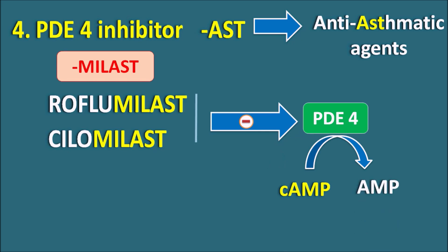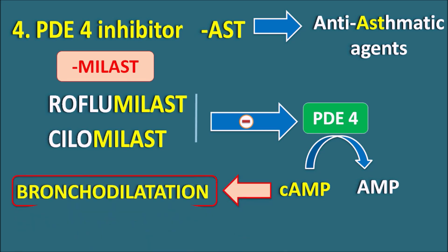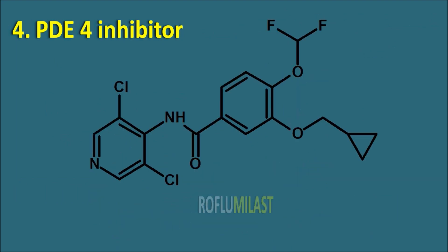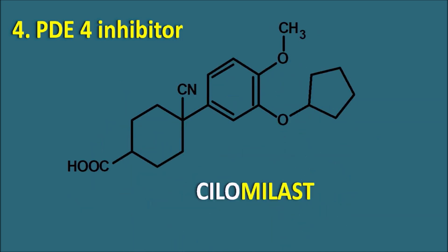These two drugs inhibit the phosphodiesterase type 4 enzyme, which is responsible for the conversion of cyclic AMP into AMP. When this enzyme is blocked, cyclic AMP levels increase, resulting in bronchodilatation. These drugs particularly act on the bronchioles to produce bronchodilatation by increasing cyclic AMP levels. That is why they are used in the treatment of asthma as well as COPD (chronic obstructive pulmonary disorder). Roflumilast is a benzamide derivative attached with a pyridine ring system, and cilomilast has a similar structure — both are anti-asthmatic agents.